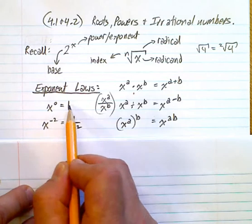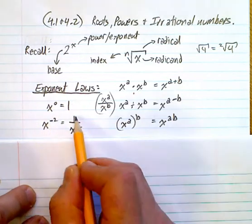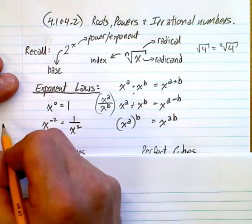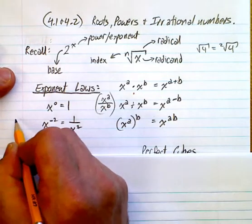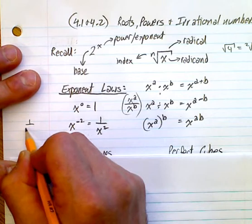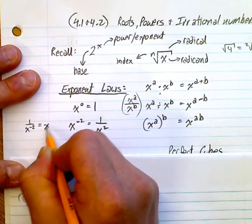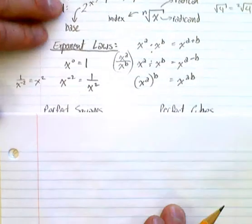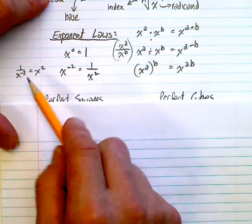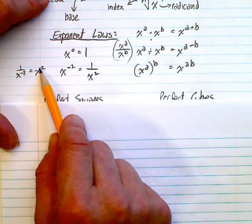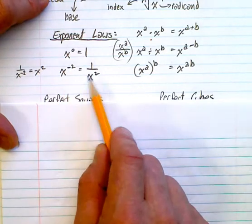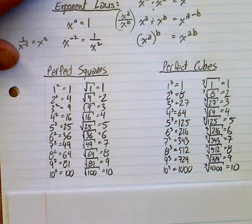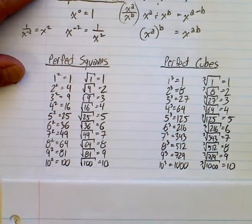You need to remember that anything to the power of 0 is 1, and a negative exponent becomes positive when you flip it. Similarly, 1 over x to the negative 2 equals x to the positive 2. Negative on the bottom becomes positive up top, negative on the top becomes positive on the bottom.